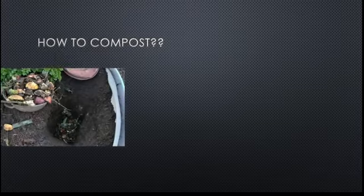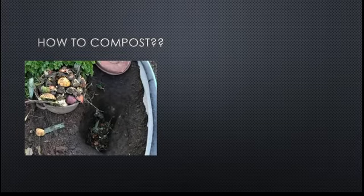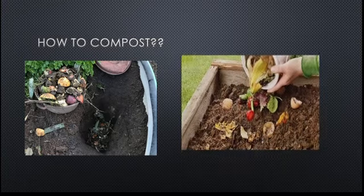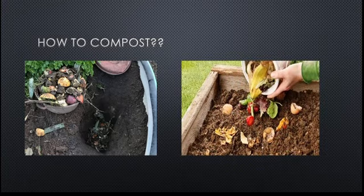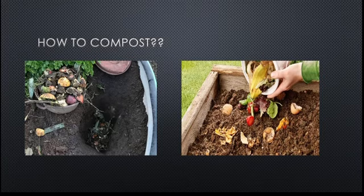Let us learn how to compost. Dig a small pit in the backyard; a large size pot can be used instead of a pit. Put waste like fruit peels, vegetable waste, dry leaves and leftover food inside the pit. Chop the largest pieces into smaller ones for easy decay. In villages, animal waste like cow dung is also added in the compost pit.